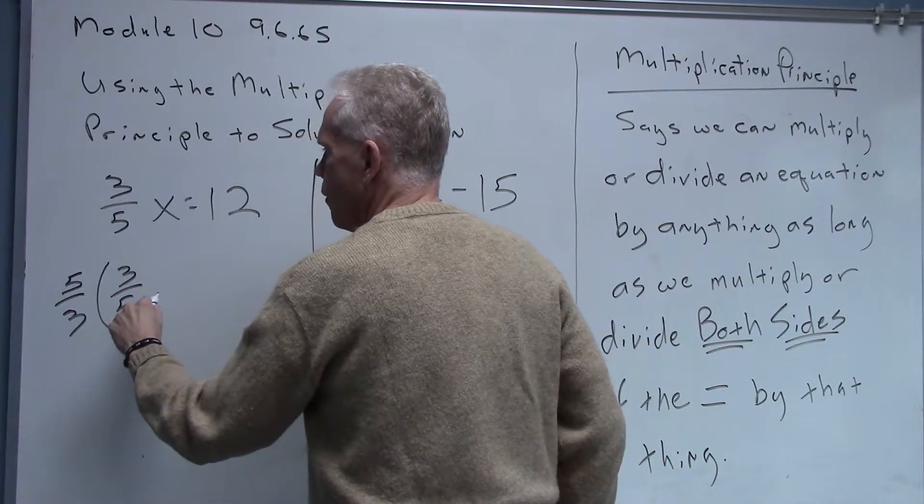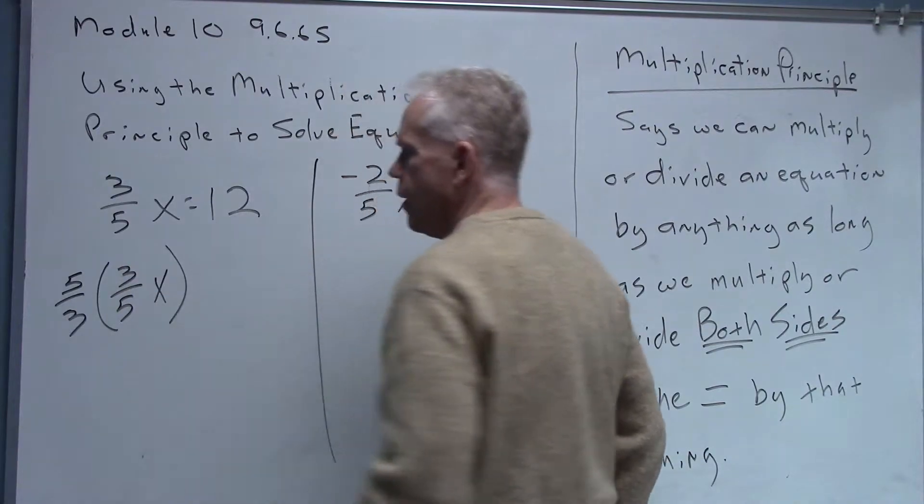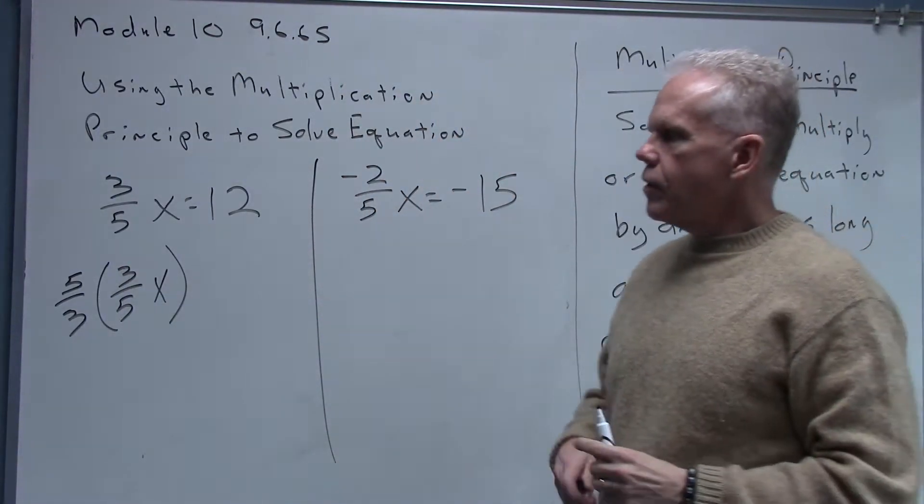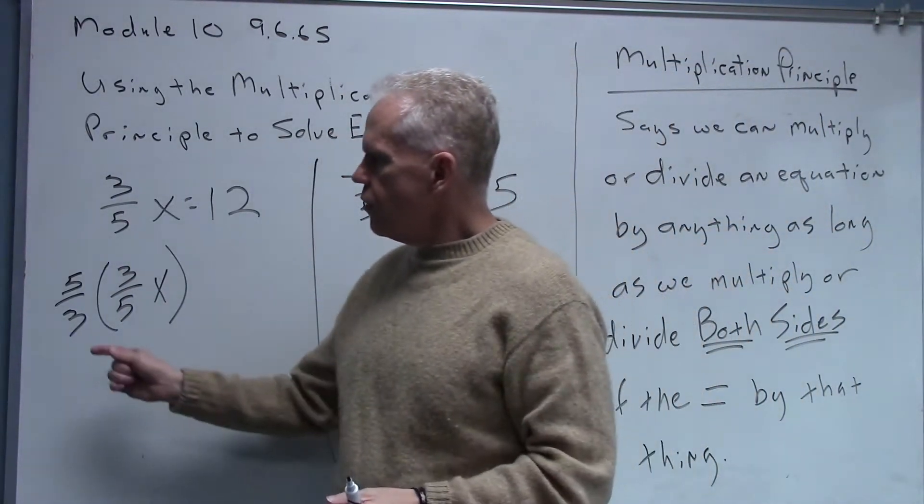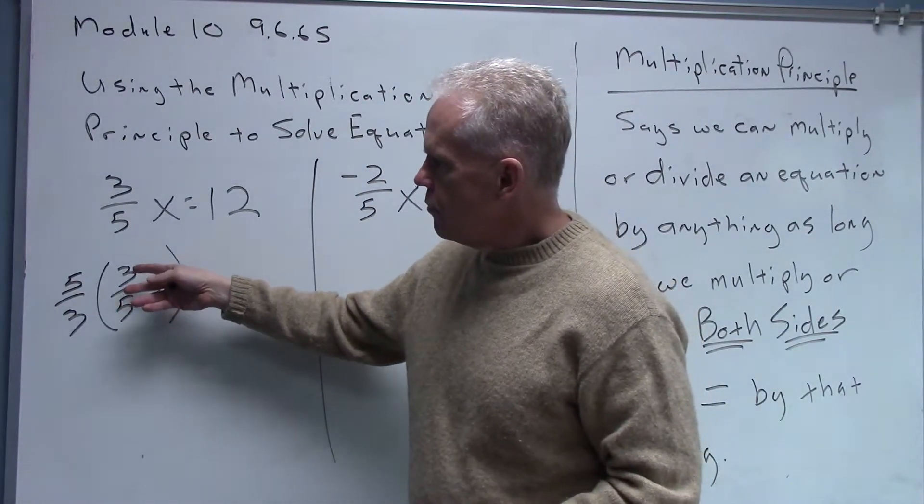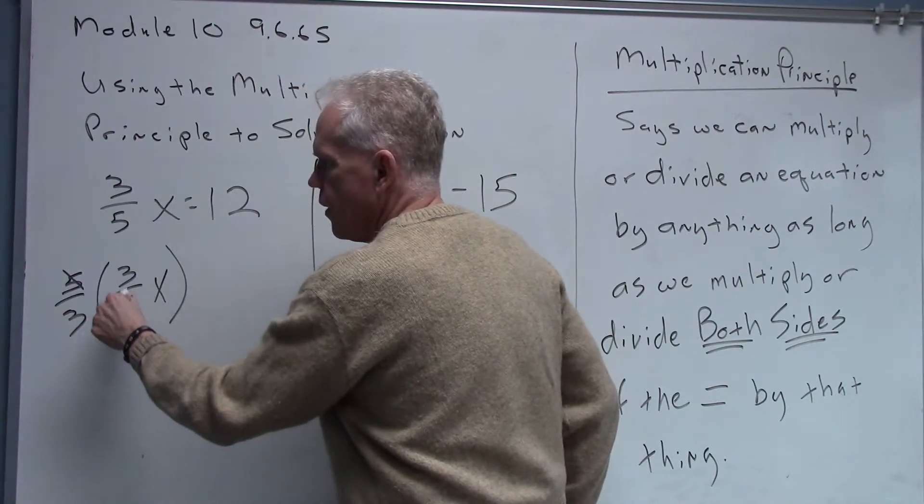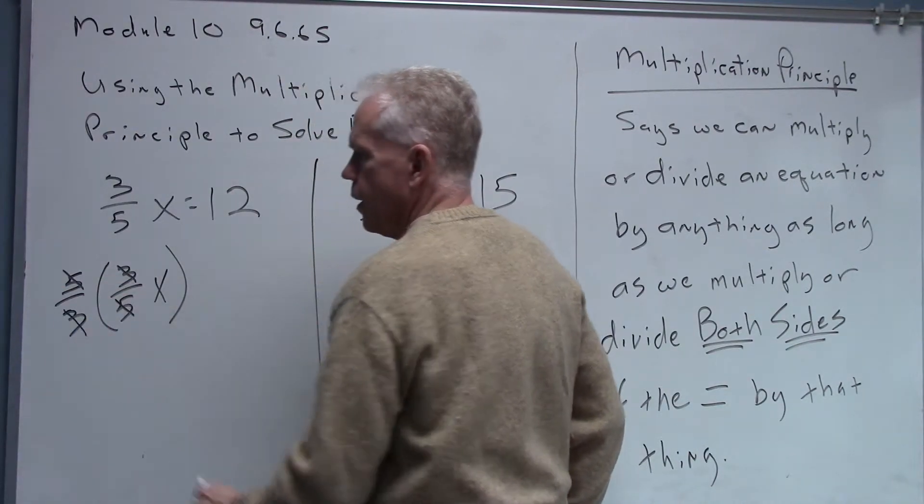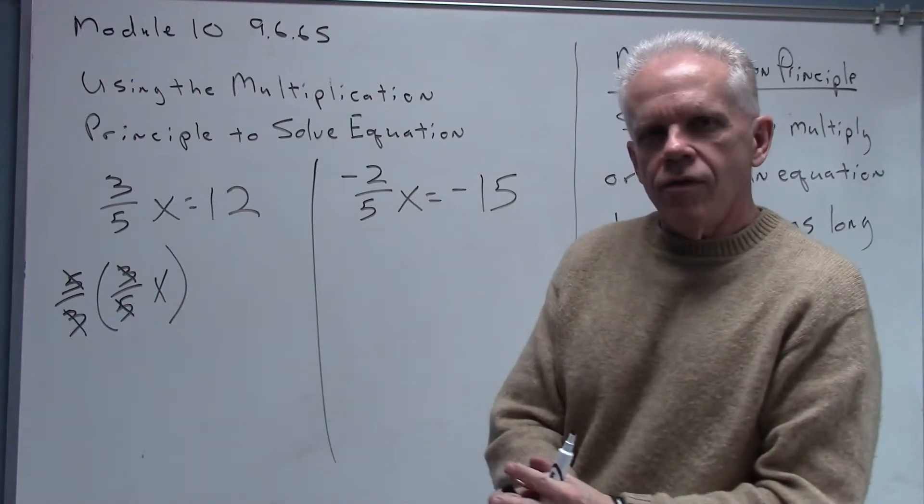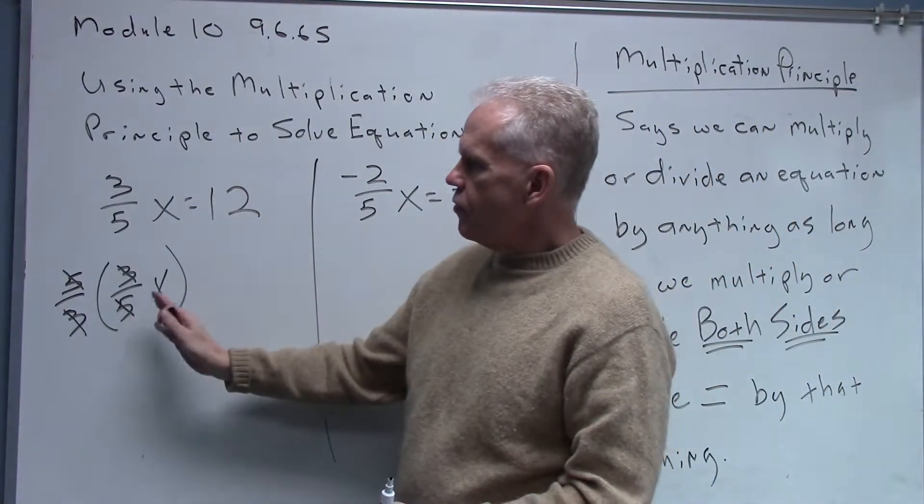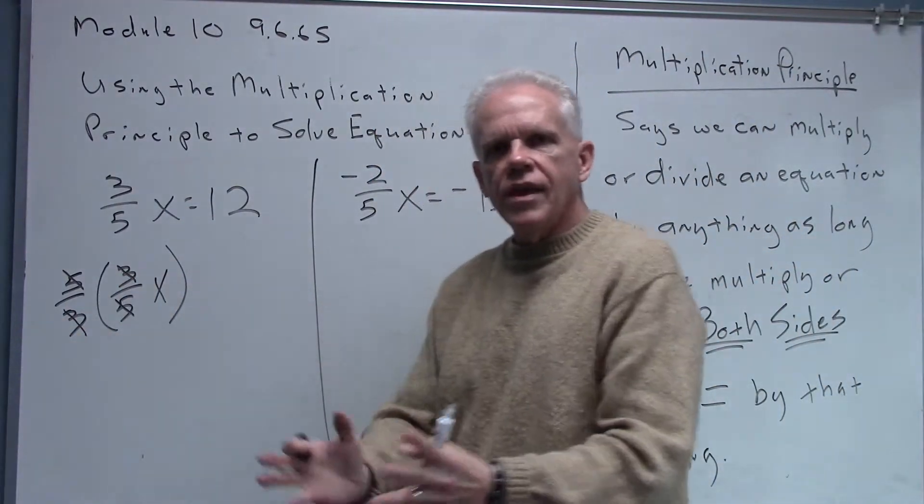Now why the reciprocal of three-fifths? Well essentially what happens is when I flip that three-fifths over and I do this multiplication, the five cancels the five and the three cancels the three. So the reason I'm going to multiply by the reciprocal is to make the whole fraction cancel itself out, leaving me with the x by itself.